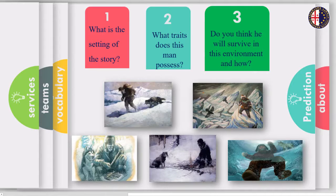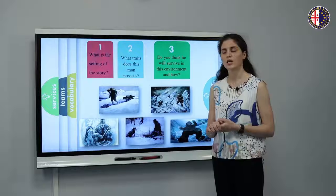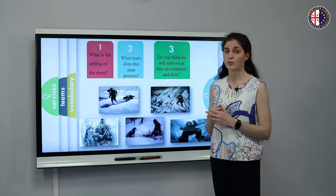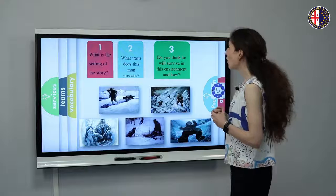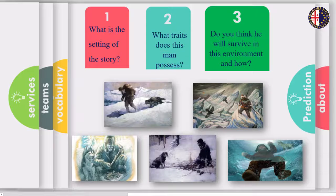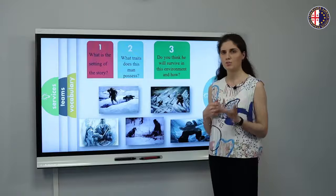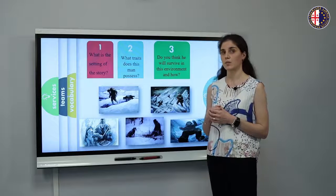As you can see, the main character is all alone in the middle of the forest. He is surrounded by snow and the temperature must be really low. The second question is: What traits does this man possess? Well, let's look at it again. He is alone in the middle of nowhere. In order to be able to survive in this kind of severe environment, you must be very brave and persistent at the same time.